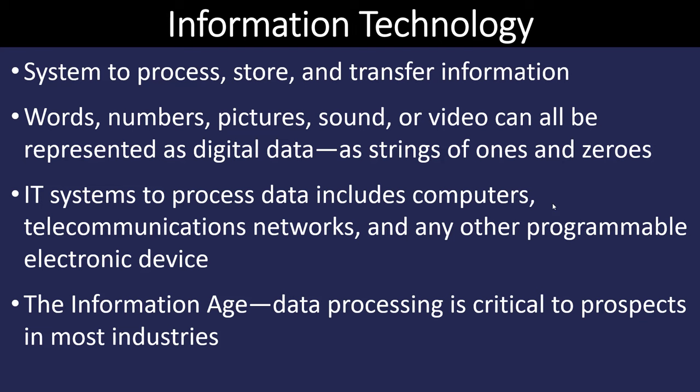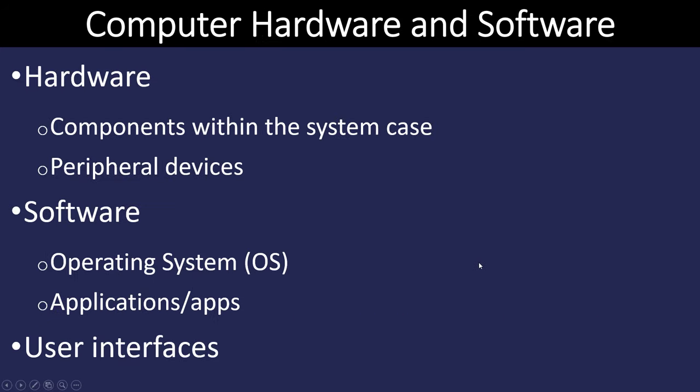In the information age we're in now, all of this processing is mission critical to businesses and industries. We can divide computers into a couple of categories: hardware and software. Hardware is easy to define — it's something that we can touch. It could be inside the case, like a processor, but it still has a physical presence. Peripheral devices such as keyboards and mice are hardware too.